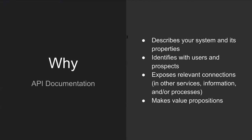Why document your API? The obvious reason is describing the system and its properties and processes — explaining everything necessary for users to use the API. But there's also an opportunity to identify with users and prospects. You want readers to see your API as a potential solution for the problem they have. You also want to expose relevant connections to other services and use your documentation to make value propositions.